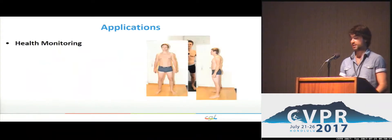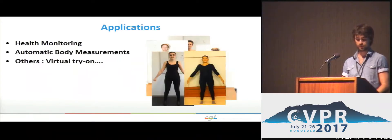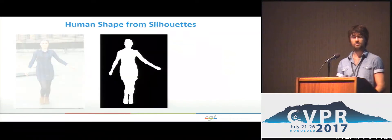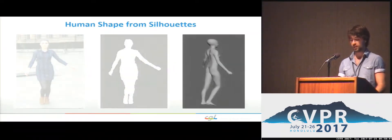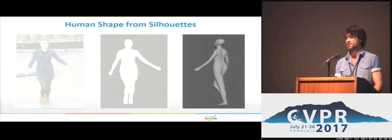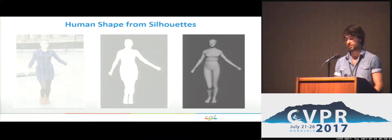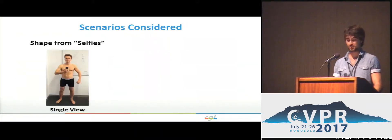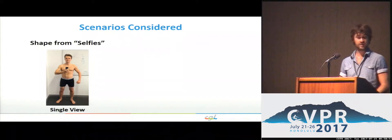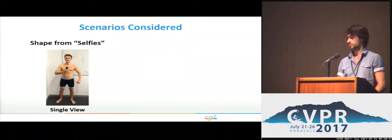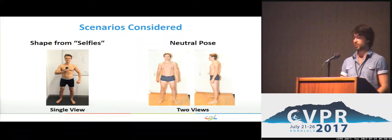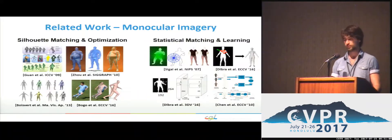3D human shape estimation has recently received a lot of interest. In this work, we tackled the problem of shape estimation from silhouettes for humans in tight clothing and poses, in compliance with two main scenarios: shape from individually taken pictures or selfies, for example through a mirror, assuming poses in mild self-occlusion; and body health monitoring, assuming one or two views in a neutral pose.